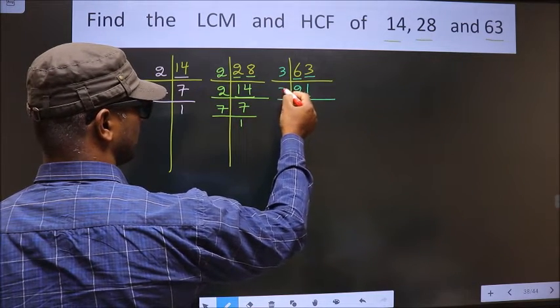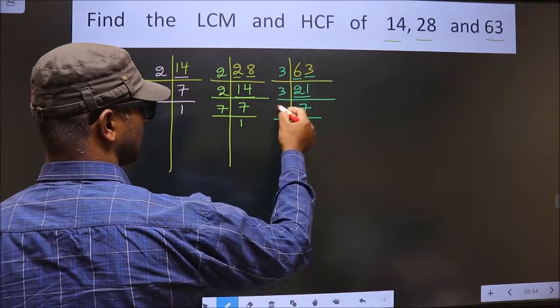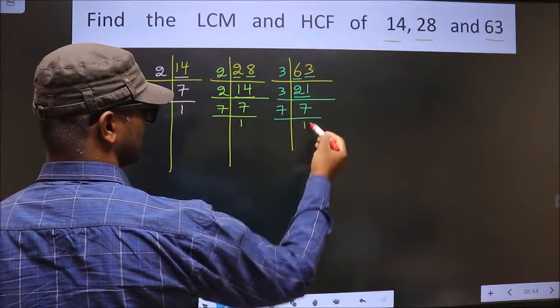Now here we have 21. 21 is 3×7, which gives 21. Now 7 is the prime number, so we take 7×1 is 7.